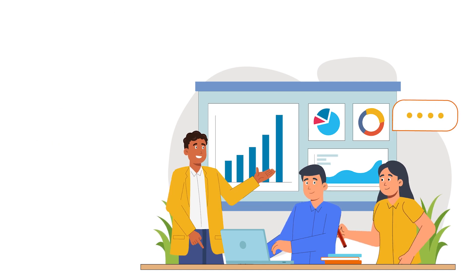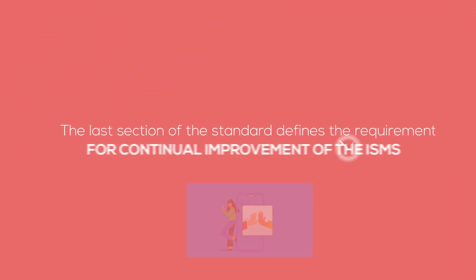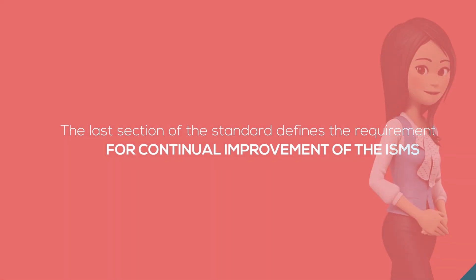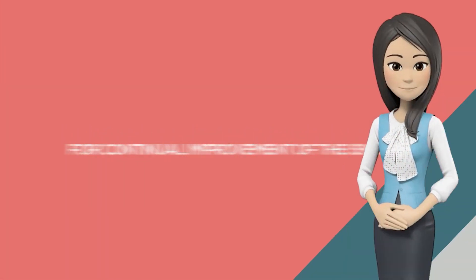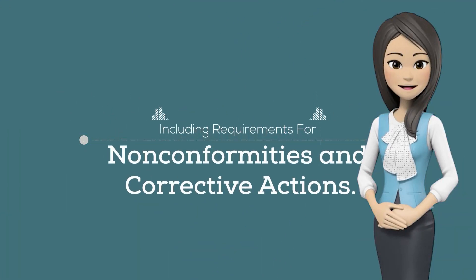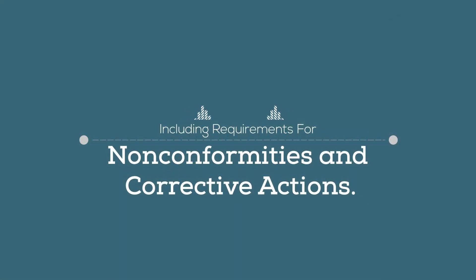Clause 10 — Improvement: This involves the actions needed to address any issues found in the check section. The last section of the standard defines requirements for continual improvement of the ISMS, including requirements for non-conformities and corrective actions.